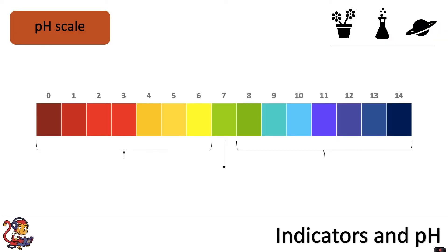Previously we've looked at the pH scale, which gave a range of colours depending on whether we put universal indicator into acids, alkalis, or a neutral substance.